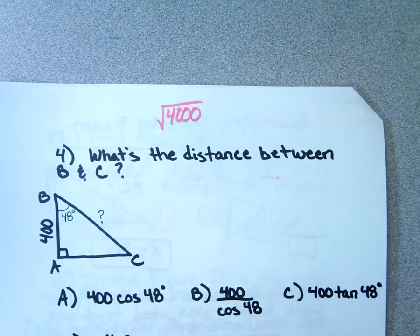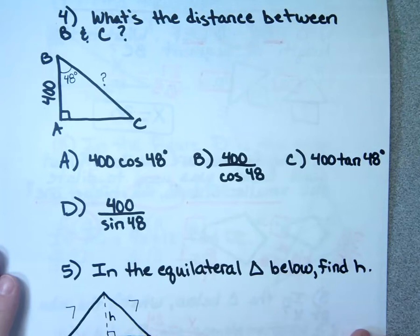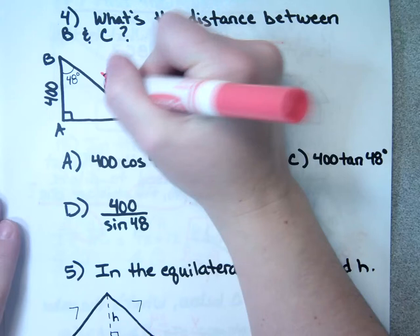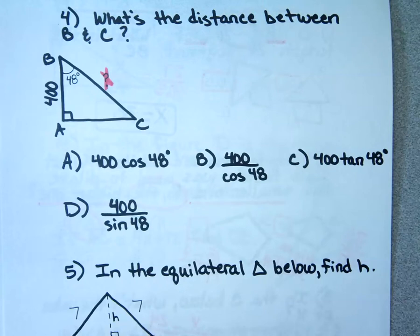Number 4 wants to know the distance between B and C — I'll put an X there. Does this look like a 30-60-90? No. 45-45-90? No. Pythagorean theorem? No. So we're going to use trig — SOH-CAH-TOA. You do get to make a note card for the final exam as well.